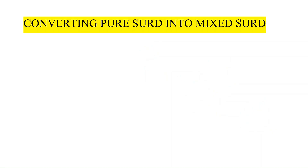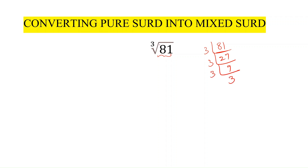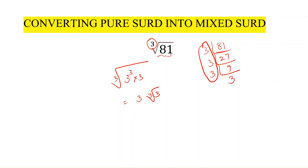Now let us convert a pure surd into a mixed surd. Consider the cube root of 81. First, do the prime factorization of 81: 81 = 3 times 27, 27 = 3 times 9, 9 = 3 times 3. So 81 = 3 to the power 4 = 3 cubed times 3. Since this is a cube root, we group sets of 3. So 81 is written as 3 cubed times 3 under the cube root, which is (3 cubed times 3) to the power 1 by 3.